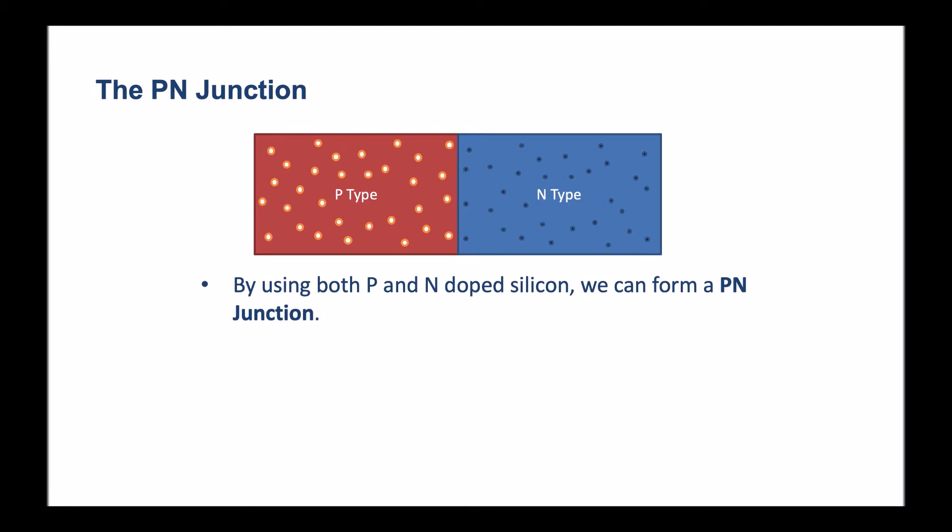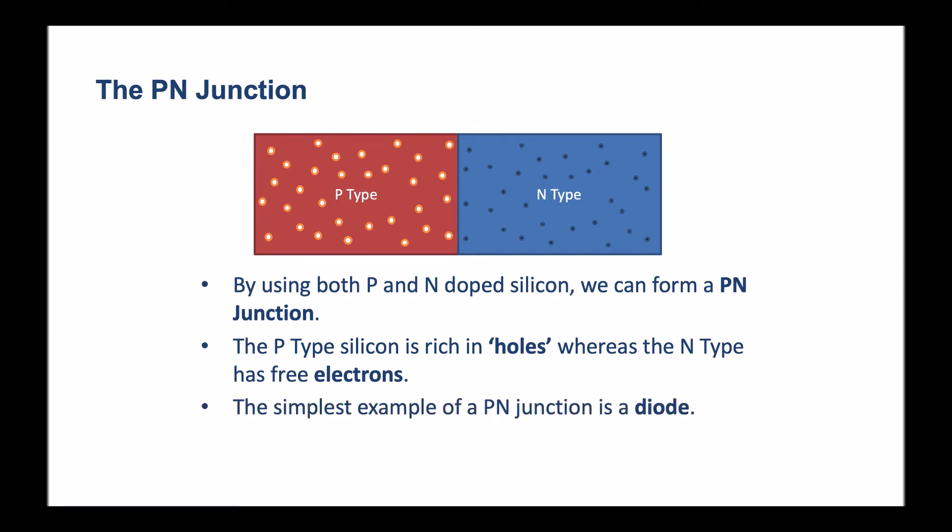So by using both p and n doped silicon, we form this arrangement called a p-n junction. The p-type silicon is rich in holes whereas the n-type has free electrons. The simplest example of a p-n junction is a diode, and we'll see how the diode behaves in accordance with what's happening here in the p-n junction.